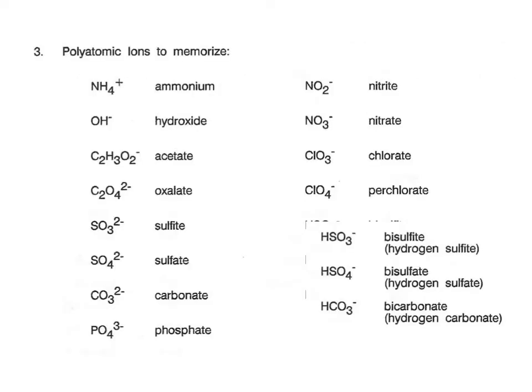This is the list of polyatomic ions that you need to memorize. Notice that there's only one with a positive charge, and that is ammonium. When we're trying to decide what kind of compounds we have, if we see ammonium — that's NH4+ — that is an indicator that we have an ionic compound. The rest of them all have negative charges. I'm going to give them to you in small sets to make memorization a little easier.